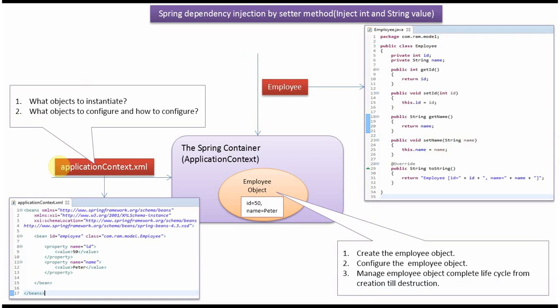So let me show you what object to instantiate, what object to configure, and how to configure. This information will be in the Spring configuration file. In this example we have specified the employee object should be created by the Spring container using setter dependency injection. Spring container reads this Spring configuration file, creates the employee object, configures it, and manages the complete lifecycle of the employee object.